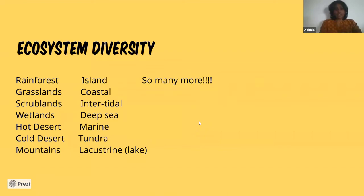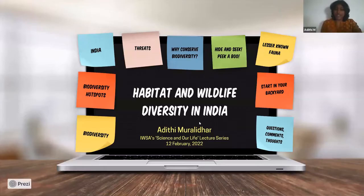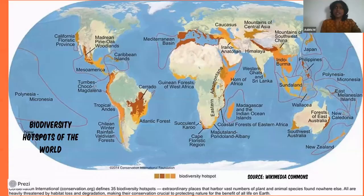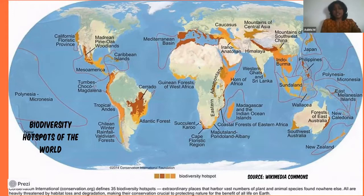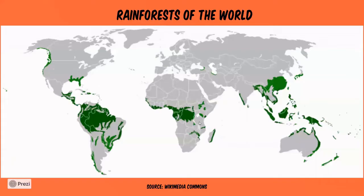There are something called biodiversity hotspots in our world — more than 30 of them — and these are locations where the species diversity found is immense. For example, where a unit area might have 10 species of mammals or birds, a biodiversity hotspot might have 30 species of birds and 50 species of plants. They are densely packed in small areas with huge species diversity, and many of them overlap with the rainforests of the world.